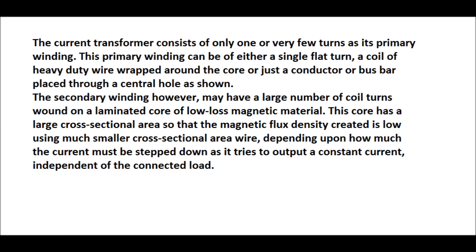The current transformer consists of only one or few turns as its primary winding. This primary winding can be of either a single flat turn, a coil of heavy duty wire wrapped around the core or just a conductor or bus bar placed through a center hole as shown in earlier figure.